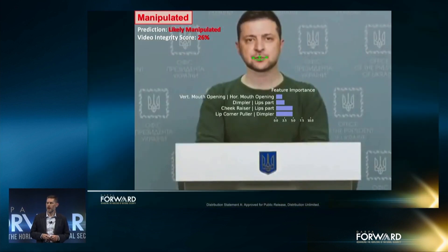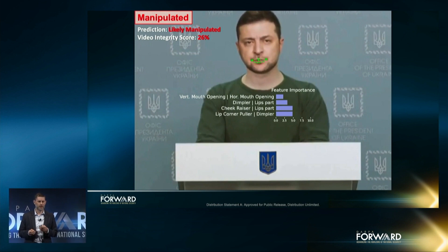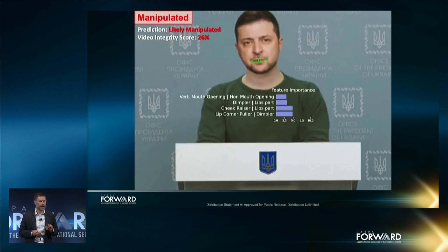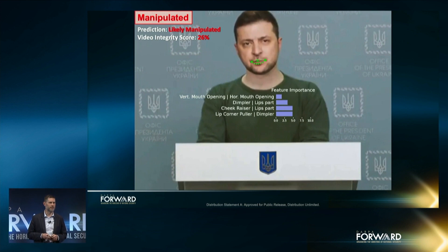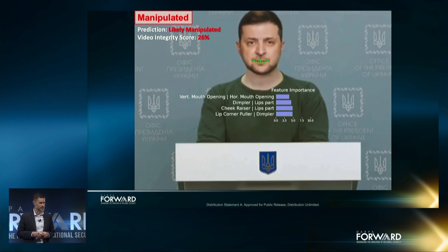A future version of the defensive tool will also highlight the action units that contributed most to the algorithm's decision, providing explainability to a human analyst. On this manipulated video, the algorithm has a low integrity score, correctly predicting that the video was manipulated. Furthermore, the tool can highlight the facial action units where the behavior of the face is inconsistent with the real individual. In this case, there are four pairs of action units that are not consistent with the real President Zelensky.